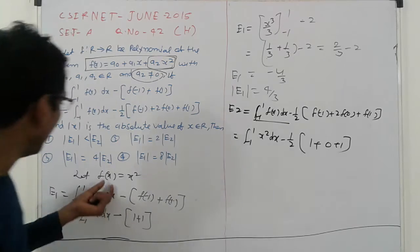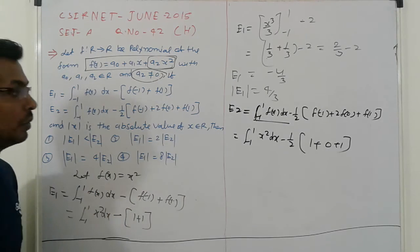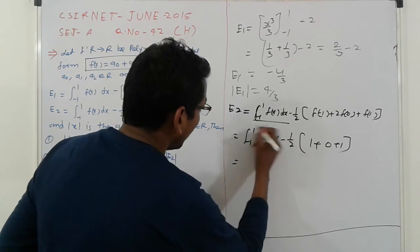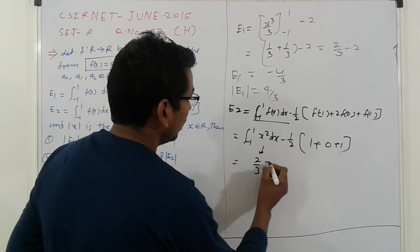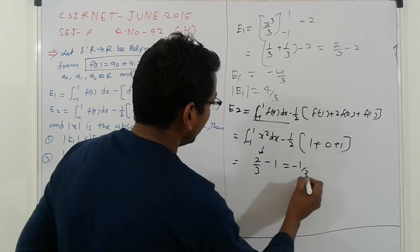Because f(0), where f(x) is x squared, is 0. And which is already found, this is 2/3. Simplify: 2/3 minus 2/2, that is 1, that is -1/3.